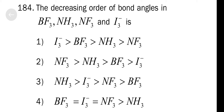NH₃ is 107 degrees, and NF₃ is less than NH₃. So the answer is option one: I₃⁻ > BF₃ > NH₃ > NF₃, since I₃⁻ is listed first in only the first option.